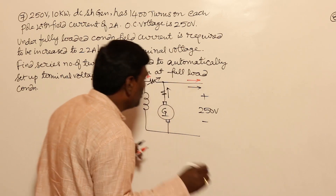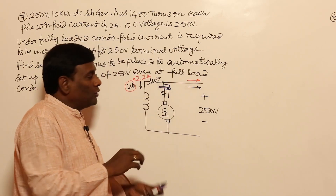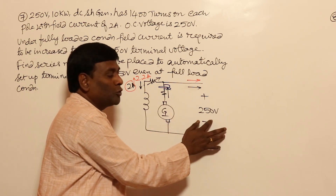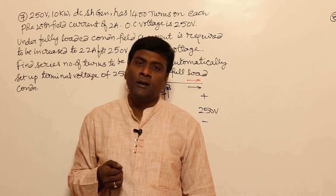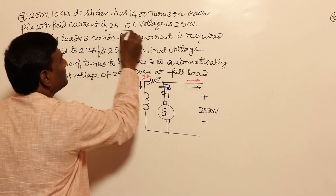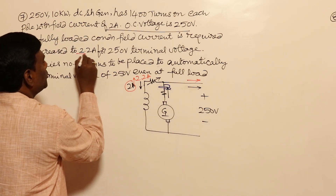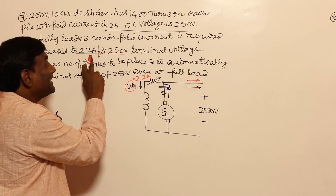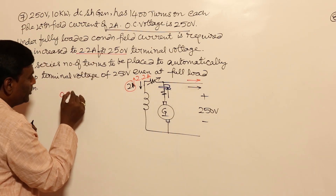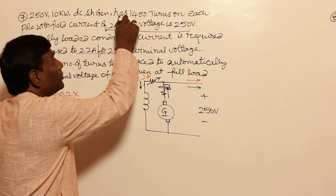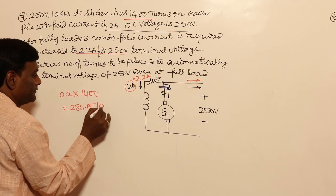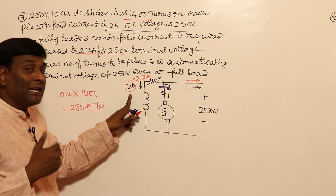Now, instead of manually varying the field, we add a series winding. If this series field winding can provide the extra flux needed to maintain 250 volts under loaded conditions, it becomes a level compound generator. Under OC conditions, 2 amperes gives 250 volts; under loaded conditions, 2.2 amperes is needed — so the extra current required is 0.2 amperes. Extra MMF required is 0.2 multiplied by 1400 turns per pole, giving 280 ampere-turns per pole.